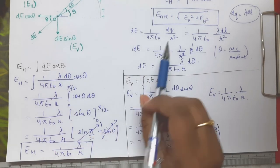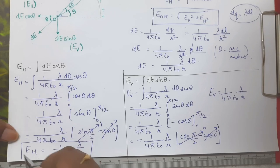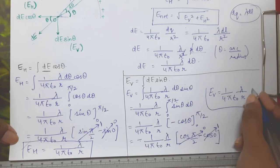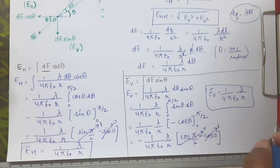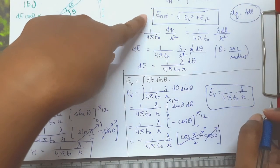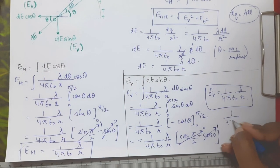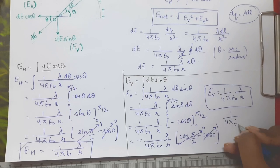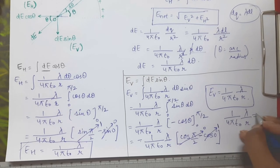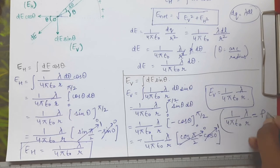Now you can find out Enet. You can see that Ev and Eh both have the same values. If I write (1/4πε₀)·(λ/r) as capital P, then Enet will be √2·P.